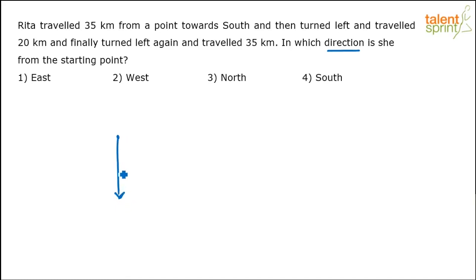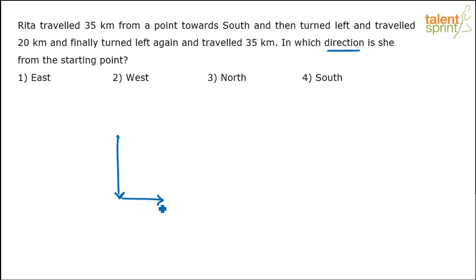Then she turns left. See, the person is going towards south. So left for that person will be on this side. When you are going in the southern direction, left is not left on paper — left is right on paper. So she turned left and traveled 20 kilometers.